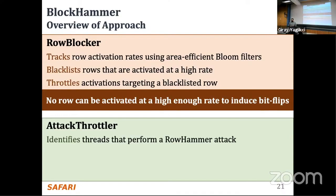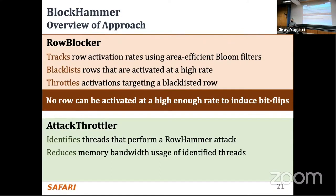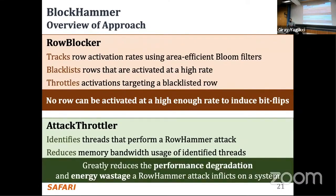The second part is Attack Throttler. It identifies threads that try activating blacklisted rows and reduces their memory bandwidth consumption by throttling their memory requests. By doing so, Attack Throttler greatly reduces the performance degradation and energy wastage a Rowhammer attack inflicts on a system.